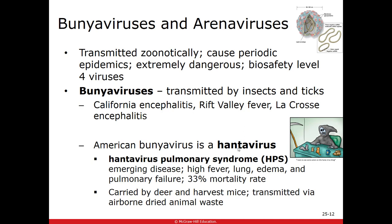Another virus in the bunyavirus group found in America is the hantavirus. This one comes from animals but is not spread by insects or ticks — it's spread by contact with dried feces, generally from mice or deer. If you have mice in your house, this is a virus you could potentially pick up. It's rare in this area, but cases do occur. It can cause high fever, respiratory distress, and edema, with about a 33% mortality rate.